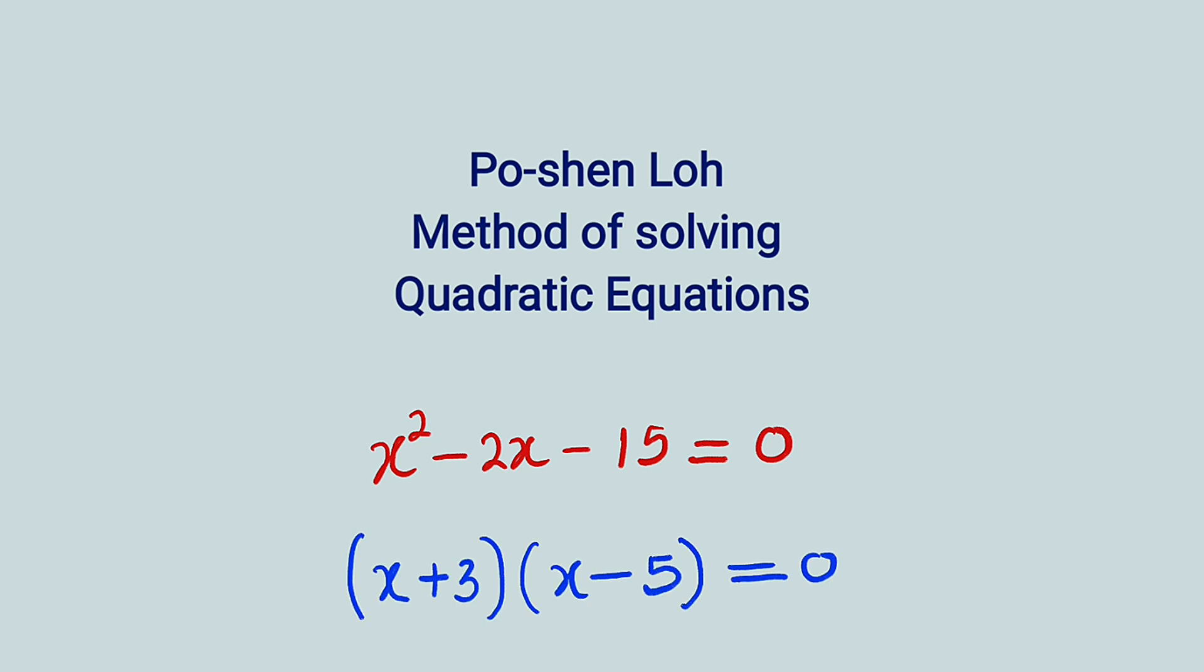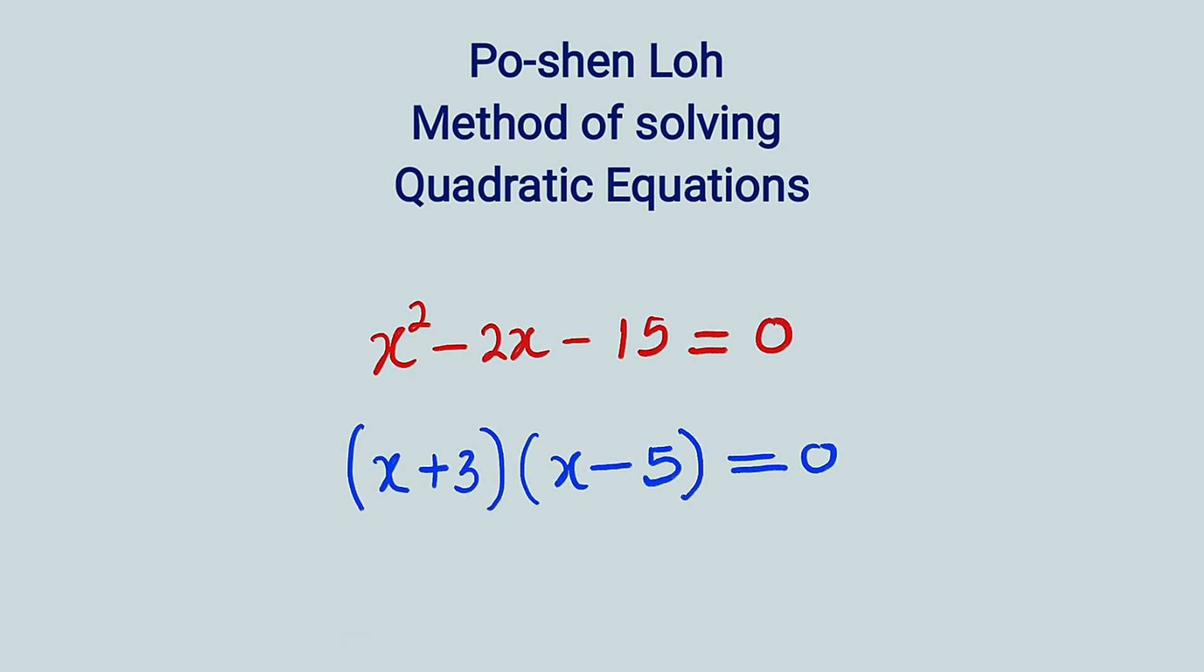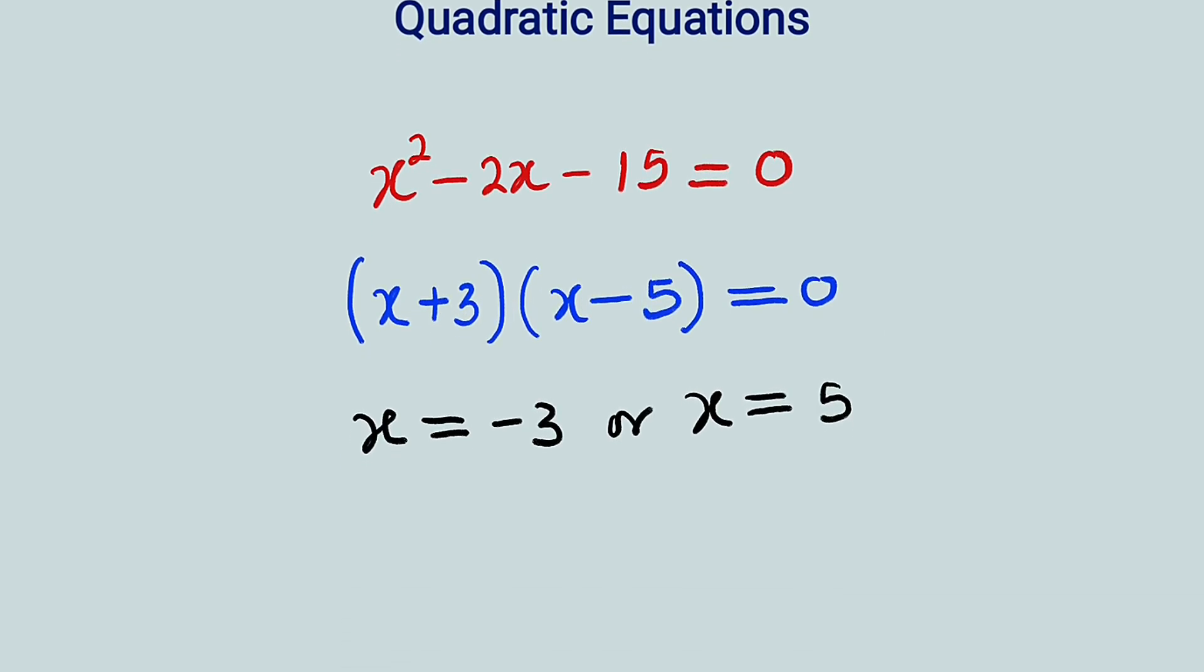And the numbers actually are minus 5 and plus 3. If you multiply x plus 3 by x minus 5, you are going to obtain this quadratic equation back. And if you set each of these two factors to be equal to 0, you are going to obtain x equal to minus 3 or x equal to plus 5.